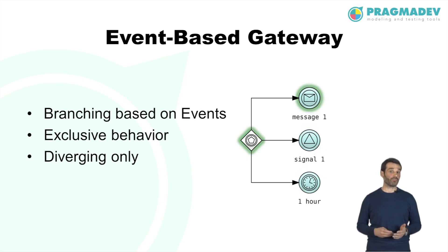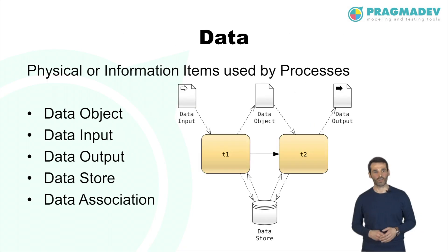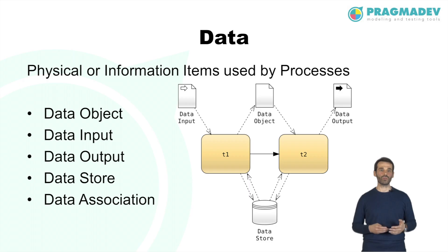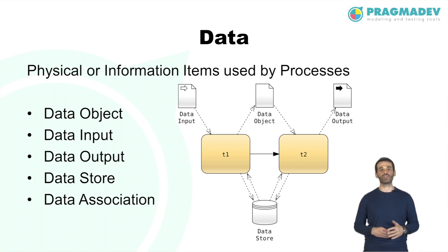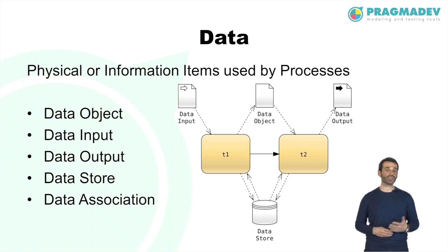In this example, if message 1 is received, its path will be taken and the other paths will no longer be valid. A traditional requirement of process modeling is to model items — physical or information items — that are created, manipulated, and used during process execution. In BPMN, this is realized through data objects, data inputs, data outputs, data stores, and data associations. These constructs do not affect the flow of the process.